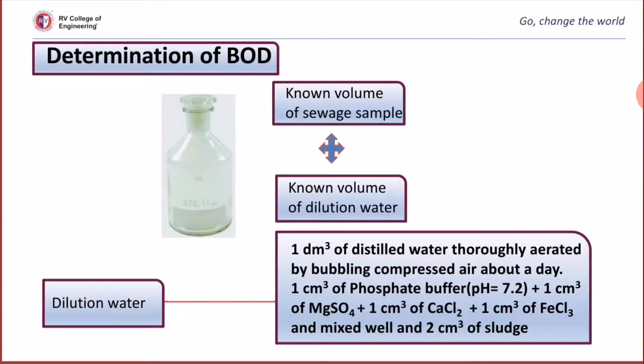Now, the question arises, how are you preparing dilution water? 1 dm cube of distilled water thoroughly aerated by bubbling compressed air for about 1 day, followed by 1 cm cube each of phosphate buffer at pH 7.2, magnesium sulfate, calcium chloride, and ferric chloride.